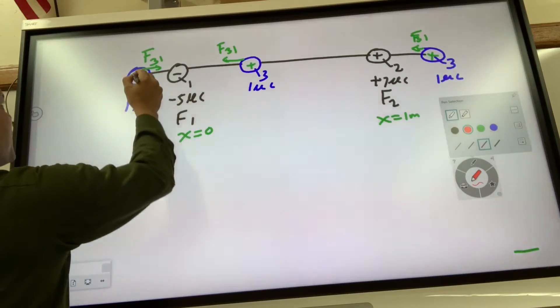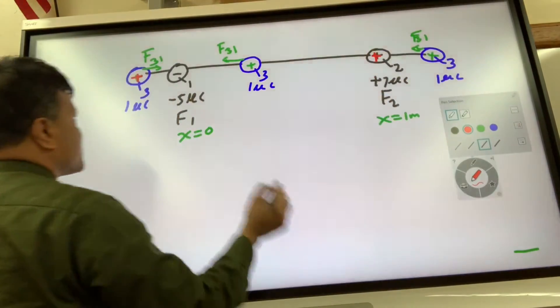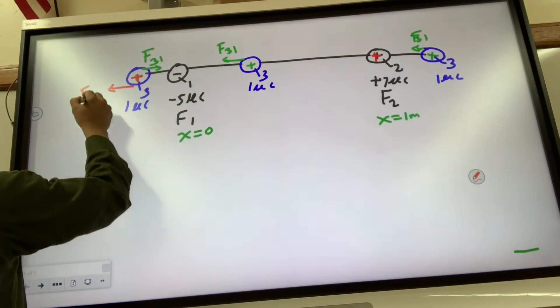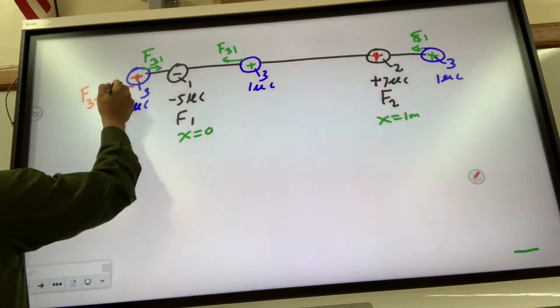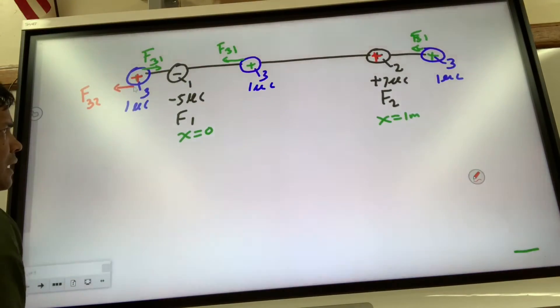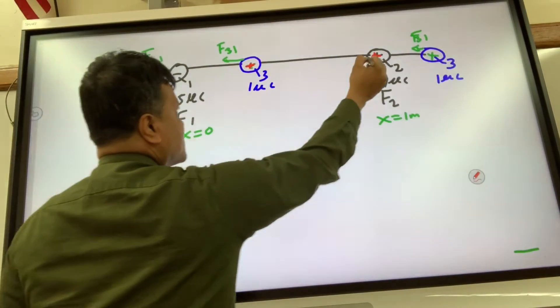Okay, so this is positive and this is also positive, so they must repel. Okay, so this is smaller. Why is this smaller? Because this is a long distance away.